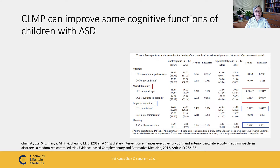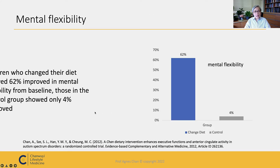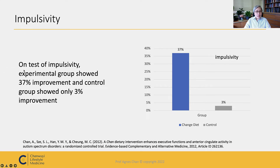Children with ASD in the experimental group — those who changed their diet for one month — demonstrated significantly improved mental flexibility and inhibitory ability compared to the control group. Children who changed their diet showed 62% improvement in mental flexibility from baseline, while those in the control group showed only 4% improvement. On the test of impulsivity, the experimental group showed 37% improvement and the control group showed only 3%.